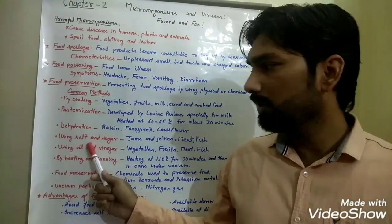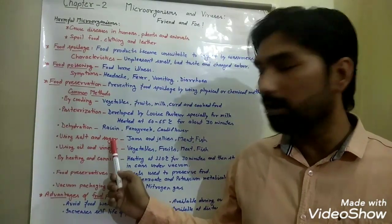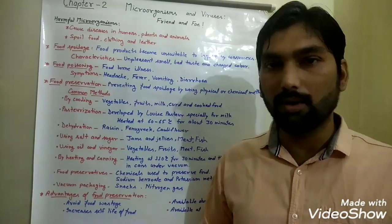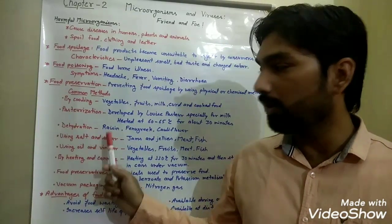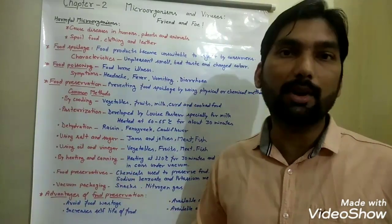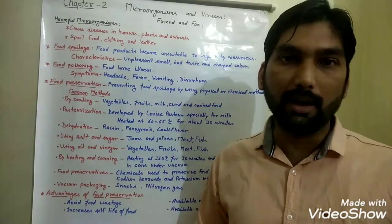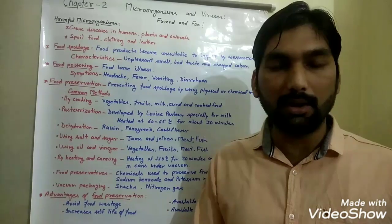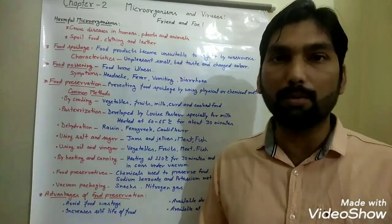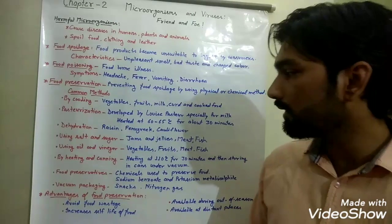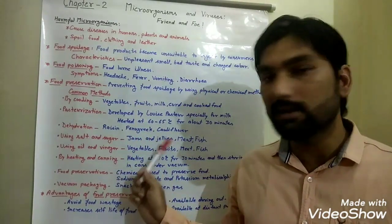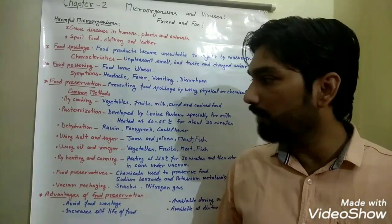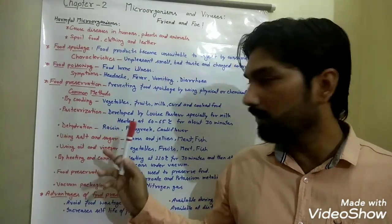Some food materials are also preserved using salt and sugar. High concentrations of salt and sugar absorb water from food materials. Since water is not available, microbes do not multiply or grow. Food materials like jams, jellies, meat, and fish are sometimes preserved by the salt and sugar method.